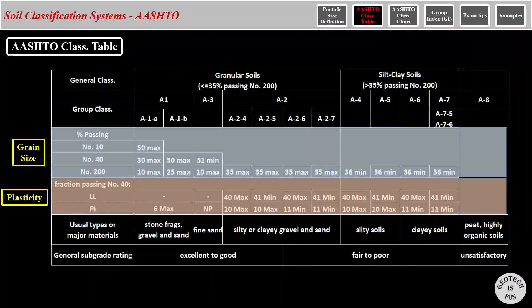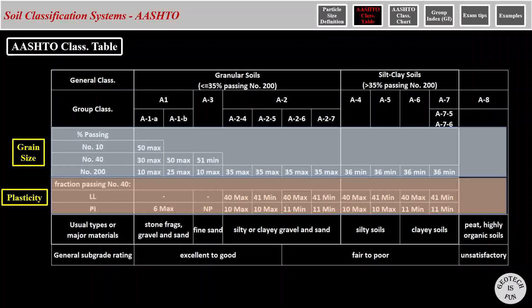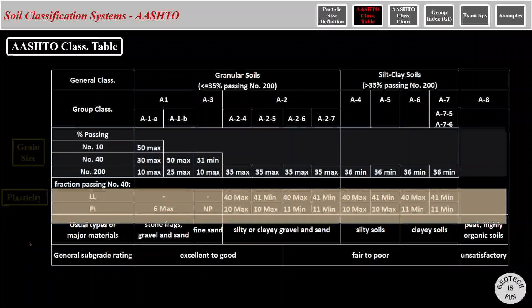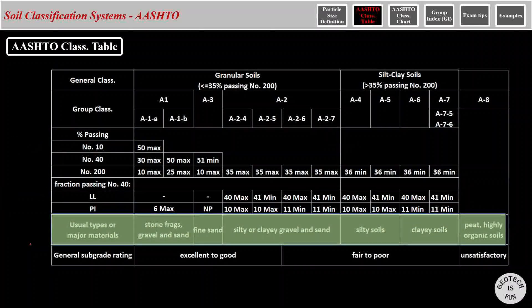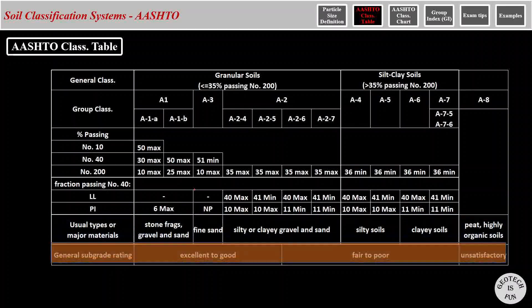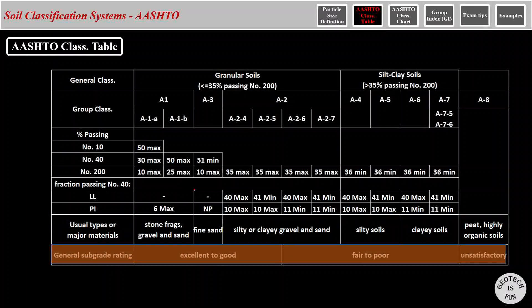The next two parts are the grain sizes and plasticities that we just talked about. The next row is basically how we usually describe these soils. For example, A-3 is fine sand. And finally on the last row, you see subgrade ratings for different soil classifications.